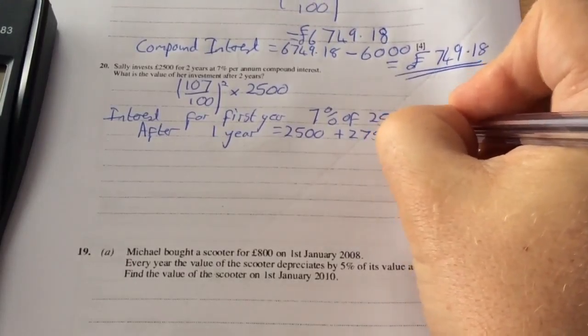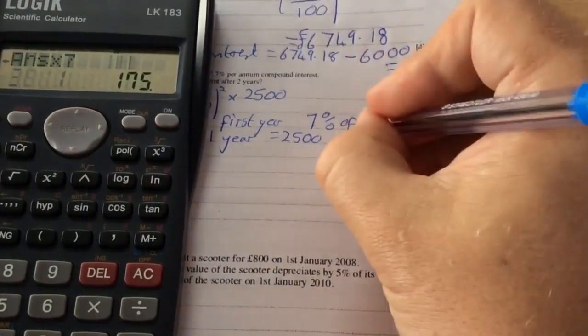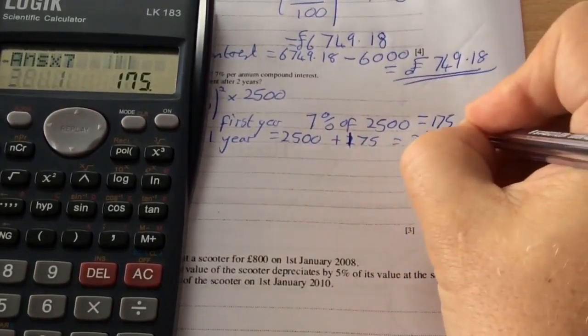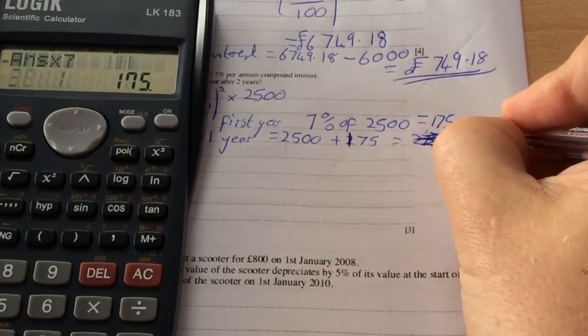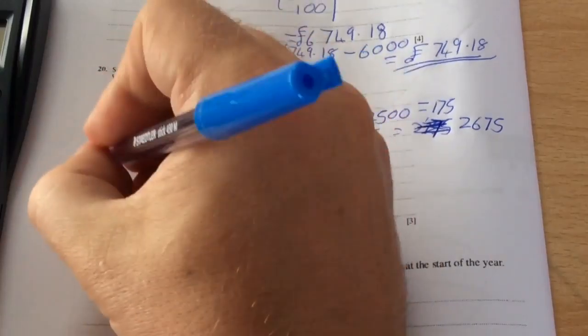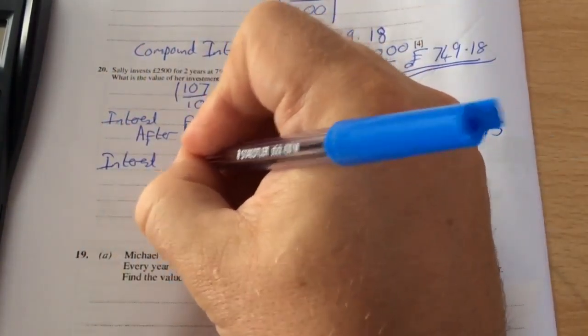Whoops, I've copied that down wrong, it's £175. So if I add them together, it's £2,675. You now then need to work out the interest for the second year.